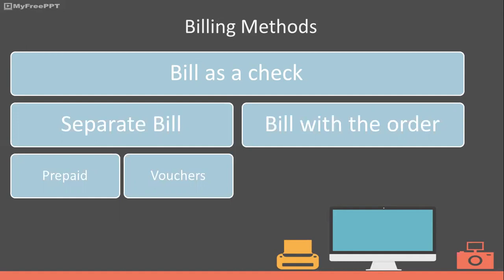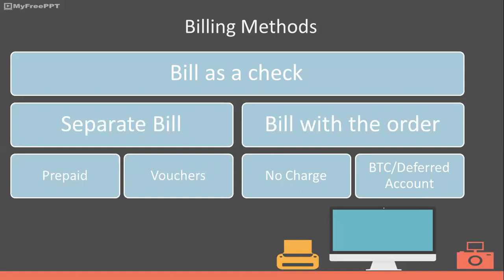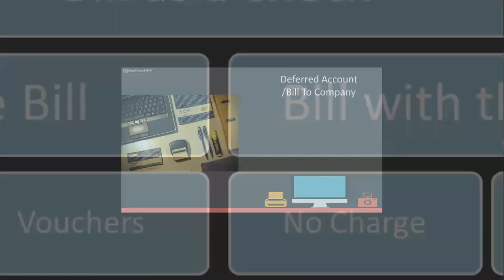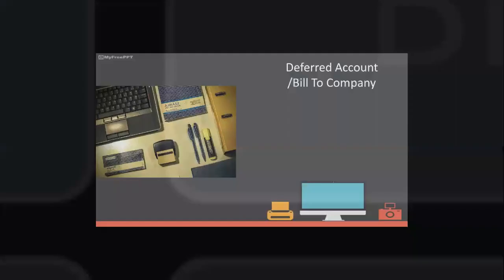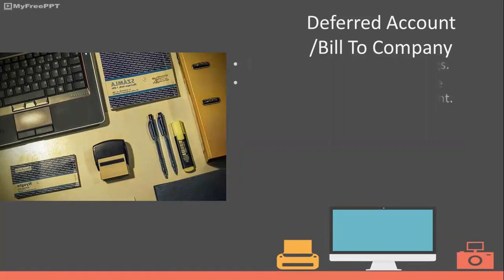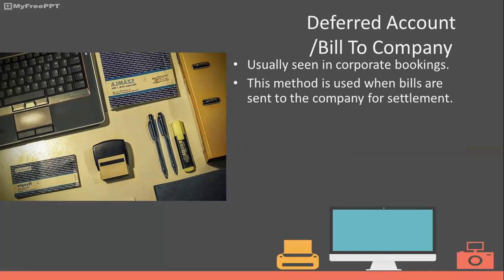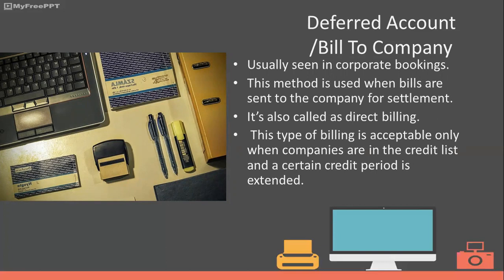The no-charge method is where the customer is requested to sign the bill for services received, and the bill is then sent to the firm or company sponsoring the hospitality. Next is BTC — bill to company — also called a deferred account or direct billing. This method is often used in banquets and corporate bookings. The bill for services is sent to the company or firm, and payment may not happen on the day of the event. This billing is acceptable only when companies are on the credit list and a certain credit period is extended.